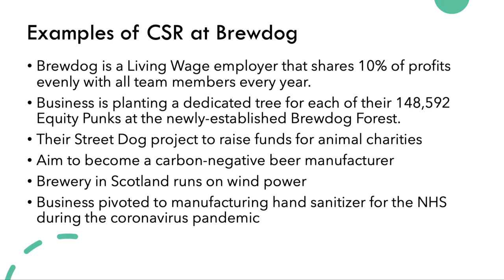Here are six examples of corporate social responsibility at BrewDog. First, the business is a living wage employer. The government sets the national minimum wage; the living wage is above that and is voluntary, and many businesses now choose to pay it. They also have a foundation and engage in profit sharing — 10% of BrewDog's profits, around eight million pounds last year, are spread evenly with all team members every year.